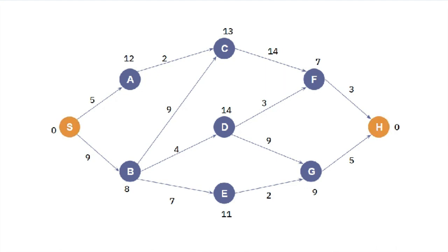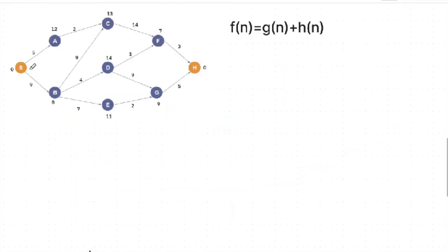The A* search algorithm uses a formula to solve any problem. With our source node, we have a path. Now we check which path is to be followed — we first check the path cost and the heuristic value.